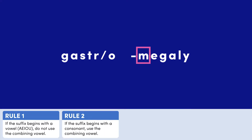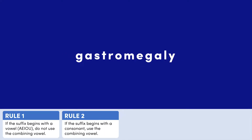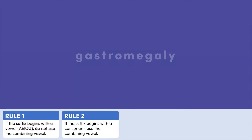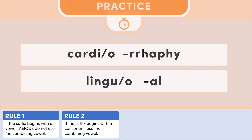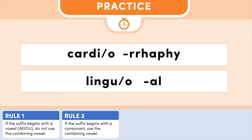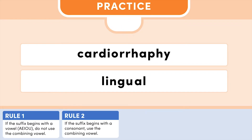Rule 2 states that if the suffix begins with a consonant, use the combining vowel. Now let's put the rules into practice. Apply the rules to spell both terms correctly. The answer will appear in three seconds, so press pause if you need additional time to answer. And here are the answers. Great job if you answered correctly.